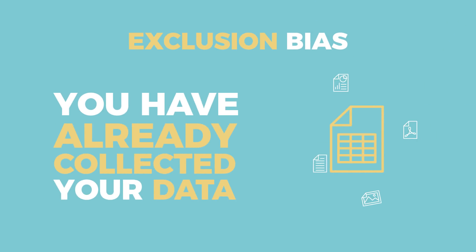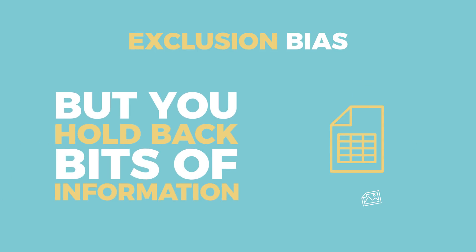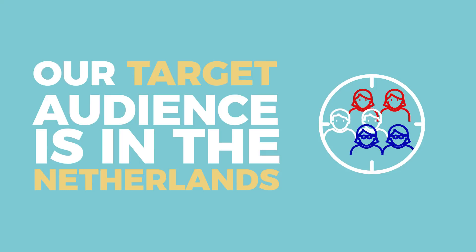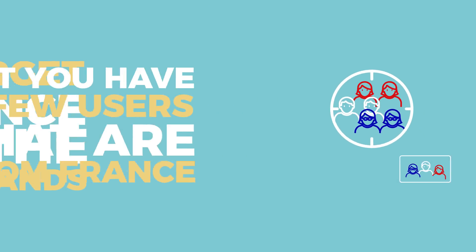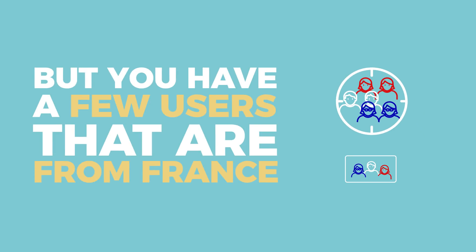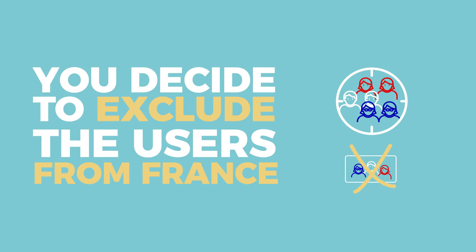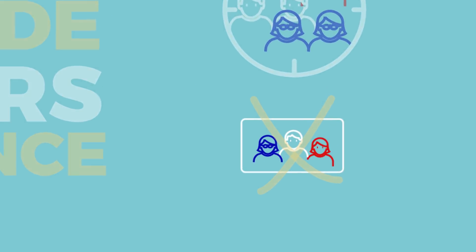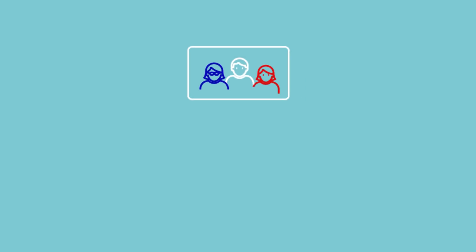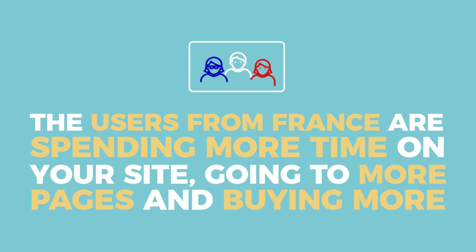Next, there's exclusion bias. Exclusion bias is when you've already collected your data, but you hold back bits of information from your analysis. We often rationalize this as cleaning our data, but sometimes we miss out on valuable insights and might be simply confirming our pre-existing beliefs. Imagine that we're looking at Google Analytics data for our website. Our target audience is in the Netherlands, but you have a few users in your system that are from France, and you decide to exclude them because there are so few of them.